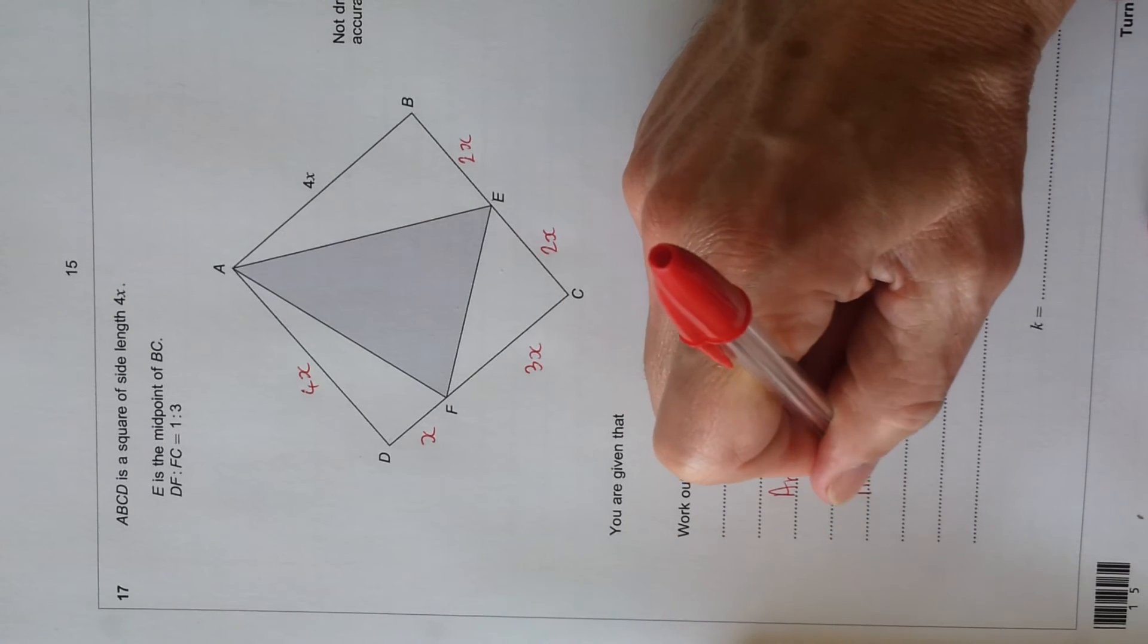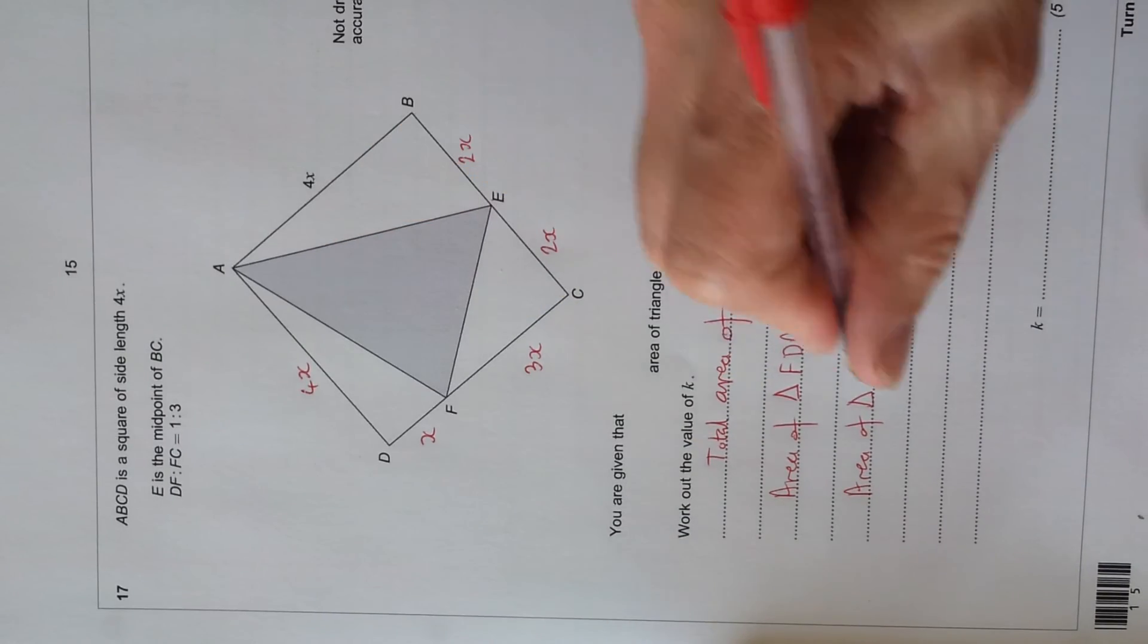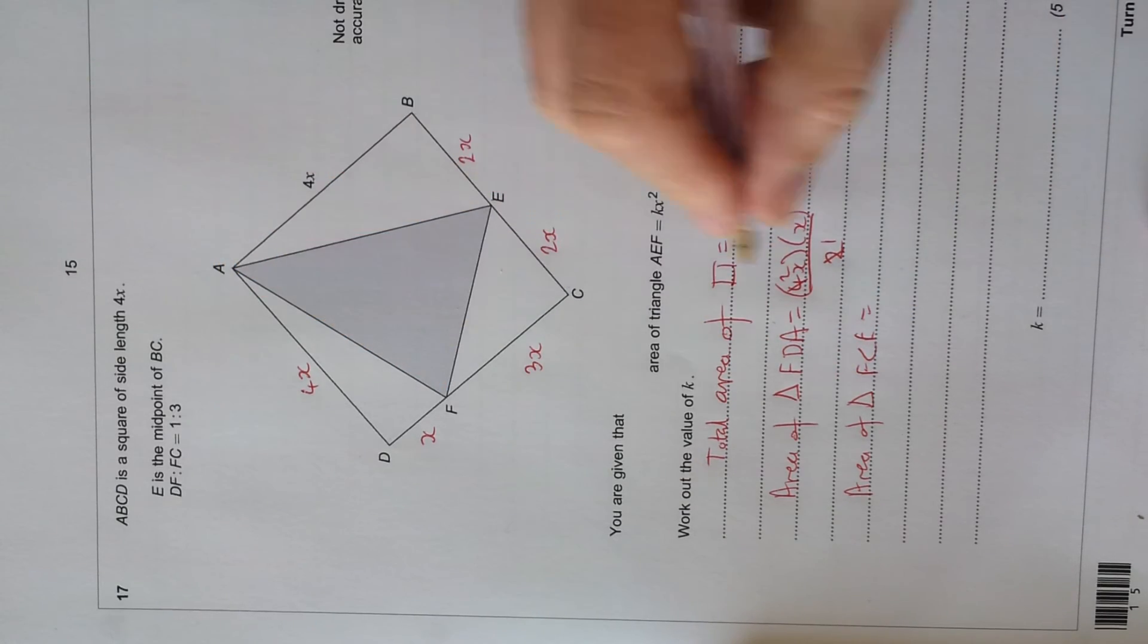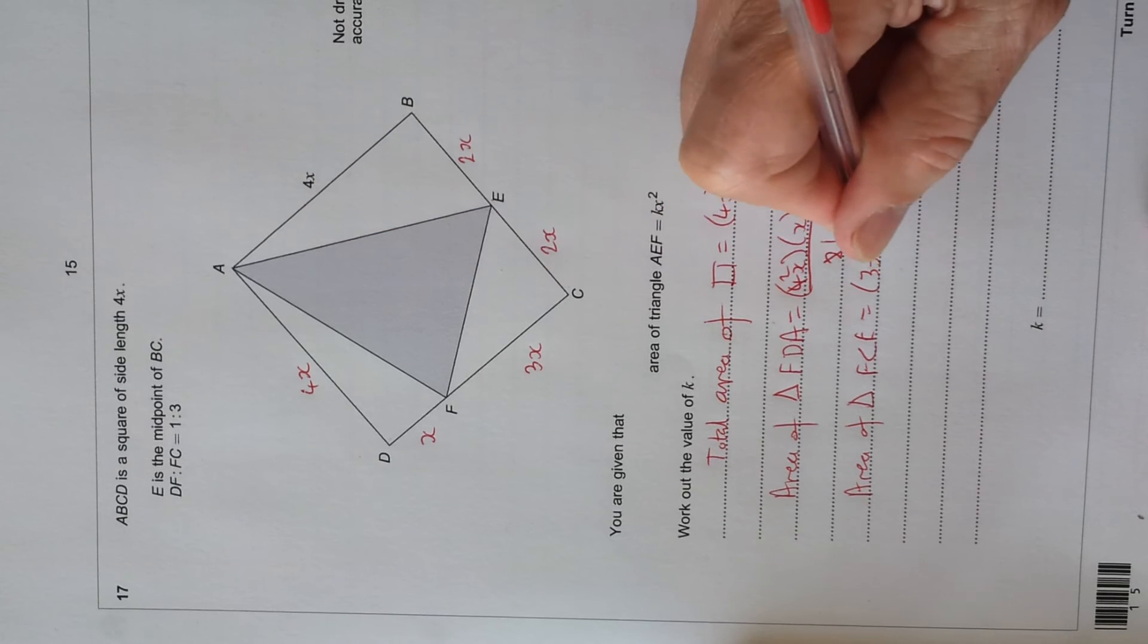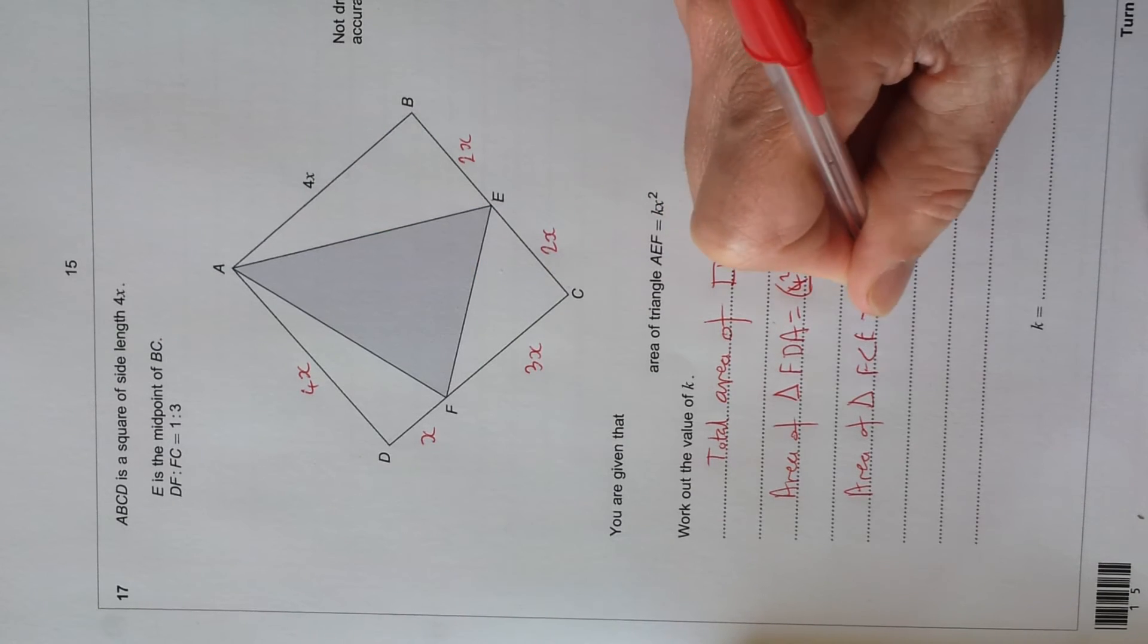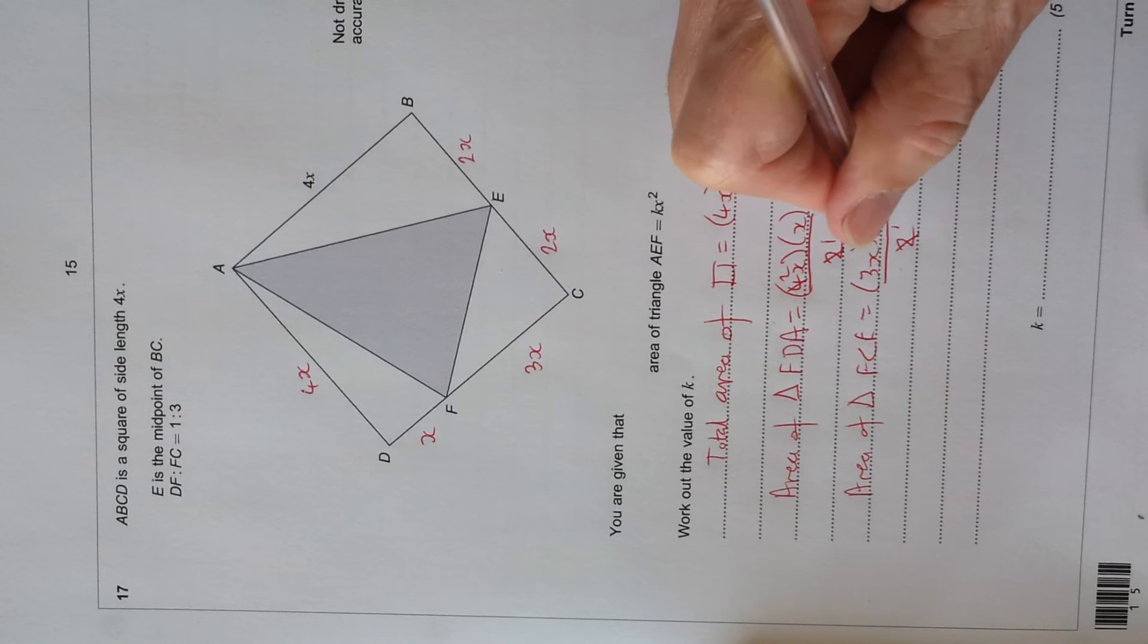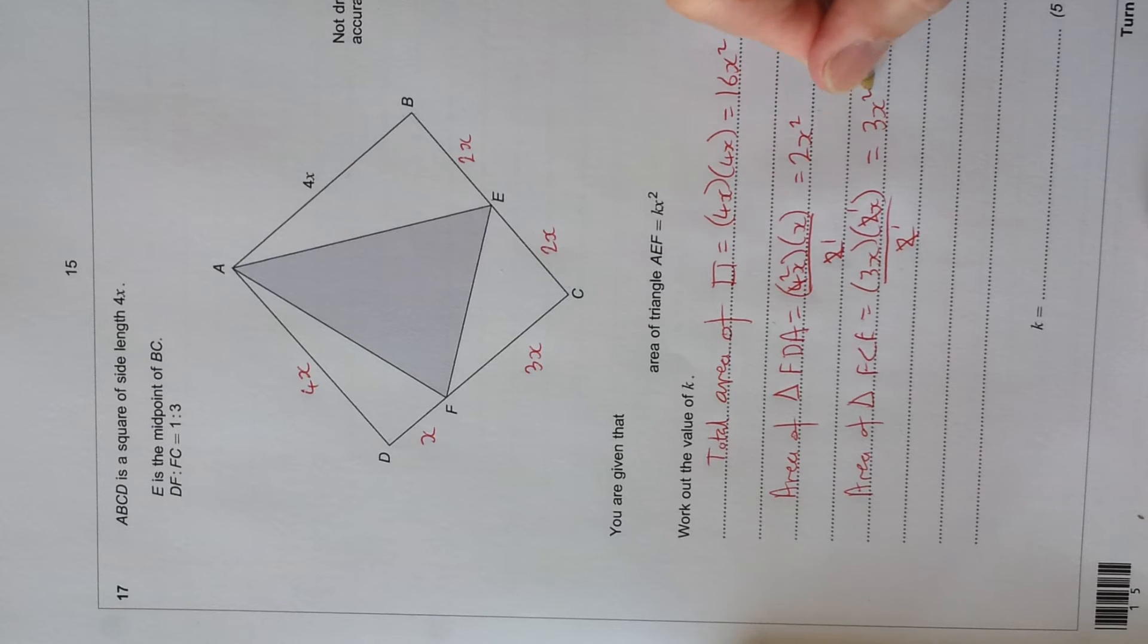Right, area of triangle FCE equals 3x times this one, 2x, divided by 2, cancel the 2s, 2 goes into 2 once, 2 goes into 2 once. So we've got 3x times x is 3x squared.